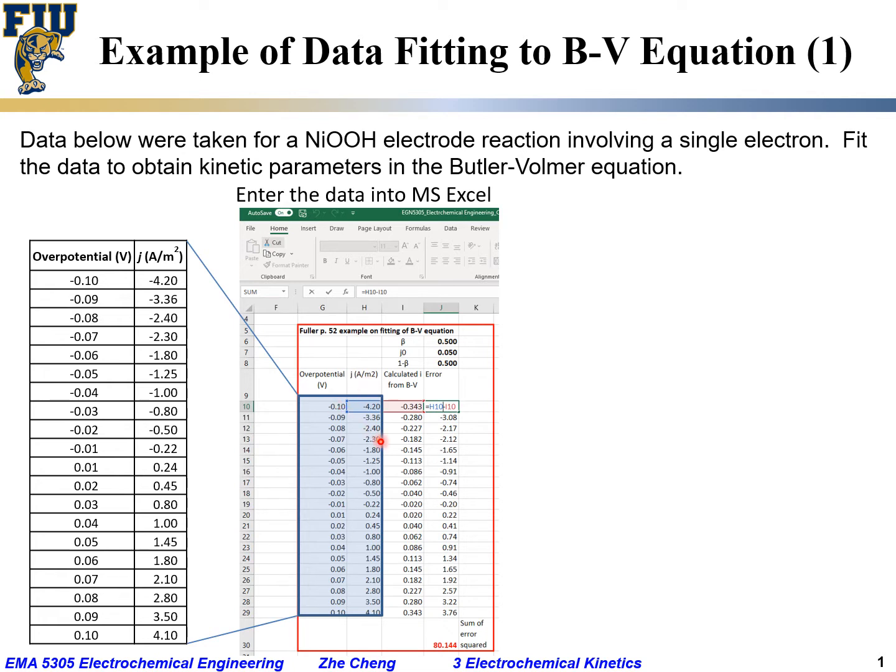With these original or raw data, the next thing that I did was to have some initial guess for the values of J₀ exchange current density and beta the symmetry factor. I initially guessed, based just on common sense, beta is quite often 0.5. 1 minus beta would also be just 1 minus 0.5 would be 0.5. And J₀, for simplicity, let me just assume it is 0.05 amp per square meter.